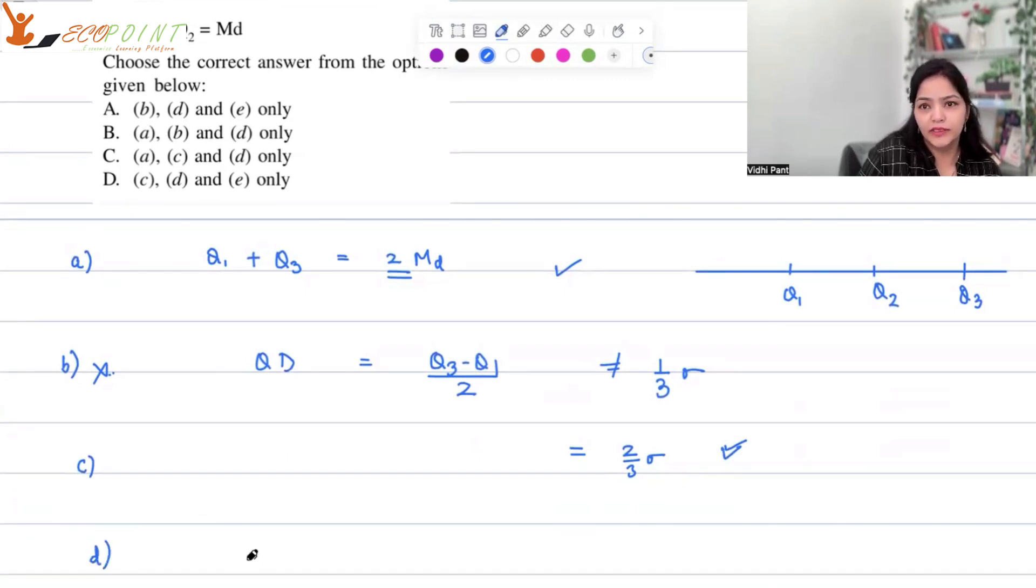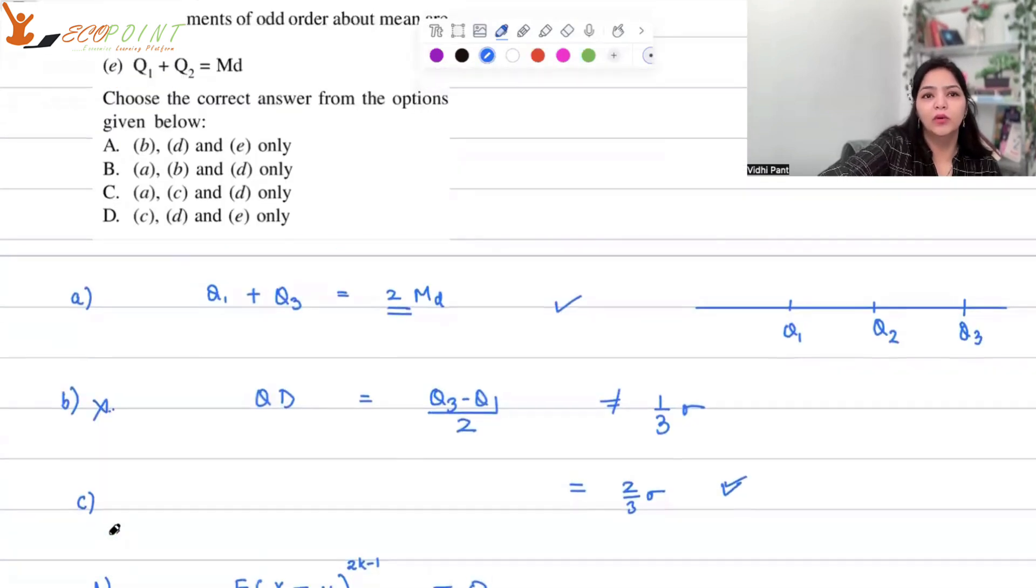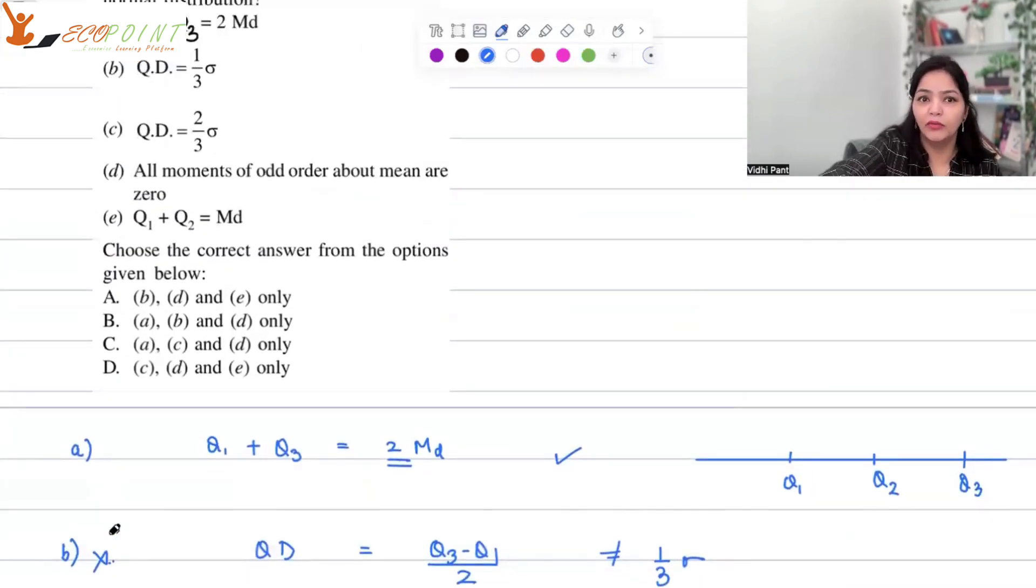Statement D is talking about moments around mean. So all moments, that is the expected value of x minus mu, and they are talking about odd, so 2k minus 1 basically. If you observe, this will be equal to 0 in case of normal distribution. Expected value of x minus mu, taking the power to be 1, this will be just E(x) minus mu. So this is mu minus mu, and this becomes 0. In fact, all other odd powers also will give you the same thing. So this statement is correct. In normal distribution, all moments of odd order about mean are 0.